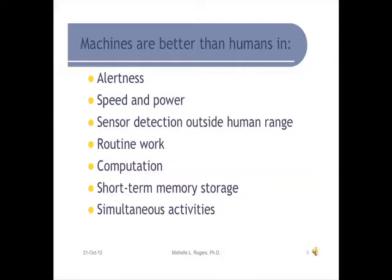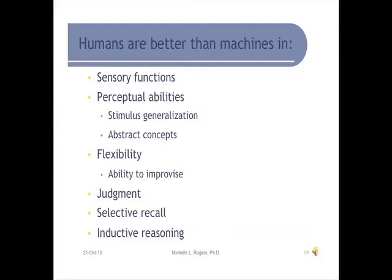Lillian Gilbreth is one of the first female industrial engineers. Out of their studies, a lot of information came out about time and motion, which led us to understand how we differentiate between what machines do well and what humans do well. Machines are much better than humans at staying alert over long periods of time, doing things quickly, doing routine work that humans get bored at, short-term memory storage, and doing many activities at the same time.